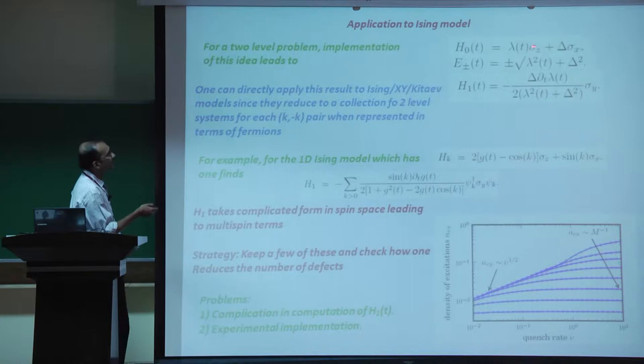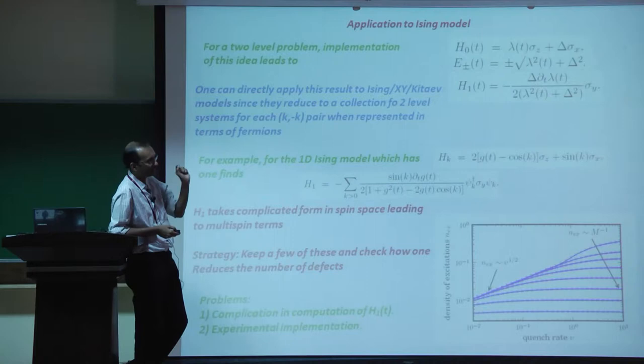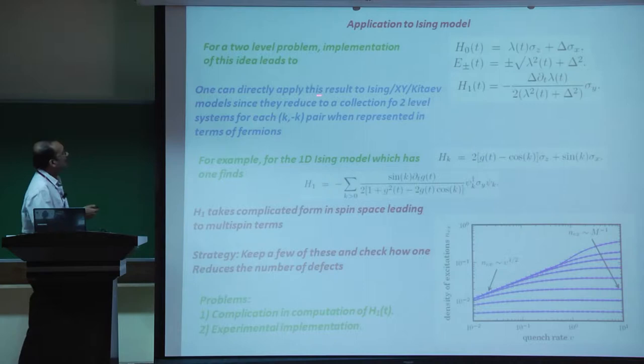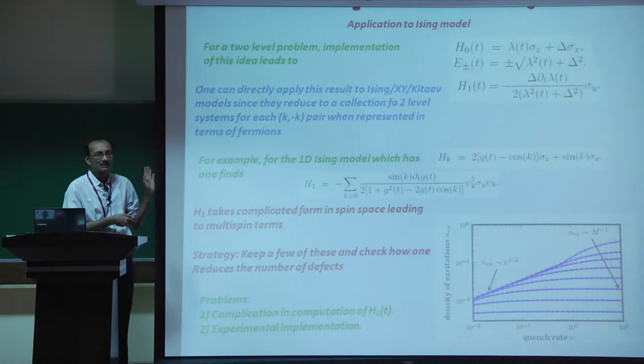For a two-level system, H_1(t) is basically given by the time derivative of the time-dependent parameter times the off-diagonal term delta divided by the instantaneous energy gap between the ground state and excited state, times the sigma-y matrix. One can directly apply this to a class of integrable models - Ising, XY, and Kitaev - since they reduce to a collection of two-level systems for each momentum pair.